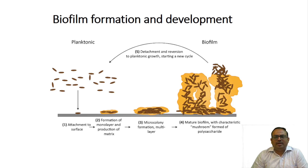Here on the left-hand side you can see how a biofilm is formed and developed. The sessile or planktonic microorganism attaches to the surface, leading to the formation of a monolayer by the production of a matrix, which further gets converted into a multilayer, and finally in a mature biofilm there is production of an exopolysaccharide matrix which forms the architecture of the biofilm.